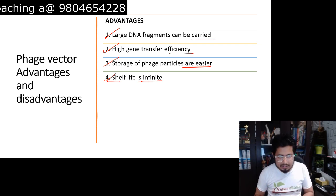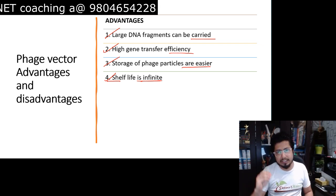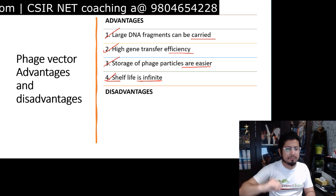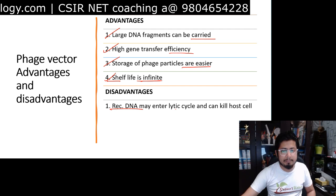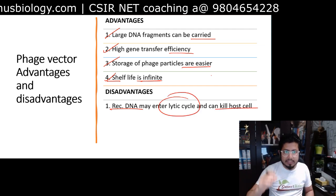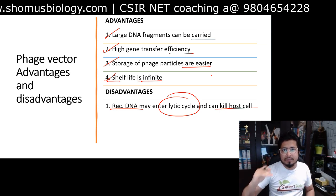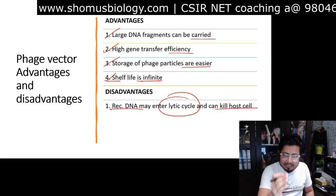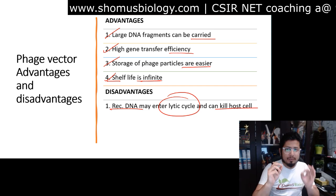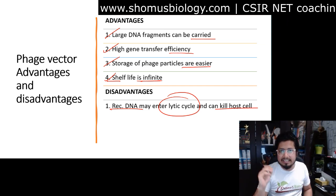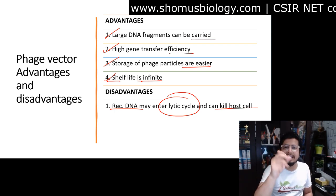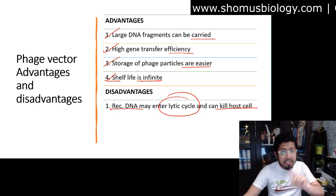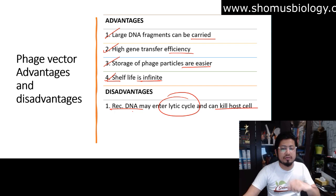The disadvantages are: first, recombinant DNA may enter the lytic cycle and can kill the host cell. This is a big problem because the phage, as a virus, always intends to kill the bacteria via the lytic cycle. The recombinant DNA can sometimes retrieve the feature of causing the lytic cycle to crack open the bacterial host cell, so host cell death is a possibility if the phage retrieves the lytic cycle function.